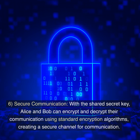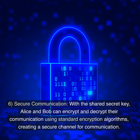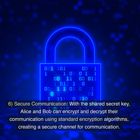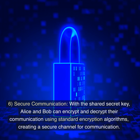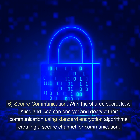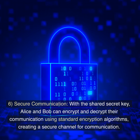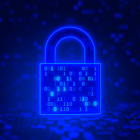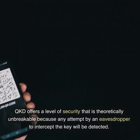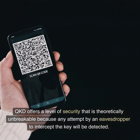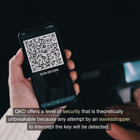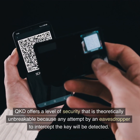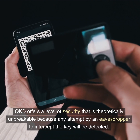Step six: secure communication. With a shared secret key, Alice and Bob can encrypt and decrypt their communication using standard encryption algorithms, creating a secure channel for communication. QKD offers a level of security that is theoretically unbreakable, because any attempt by an eavesdropper to intercept the key will be detected.